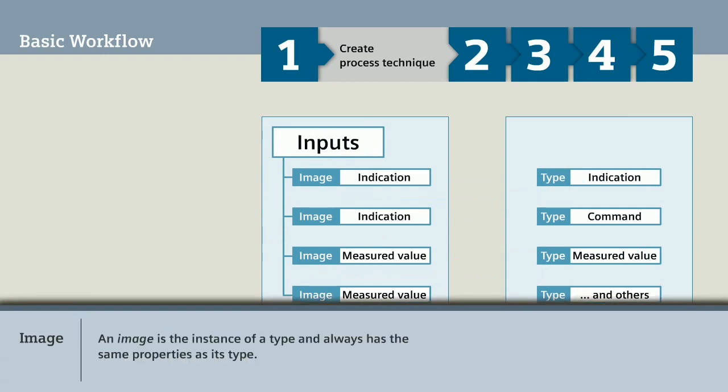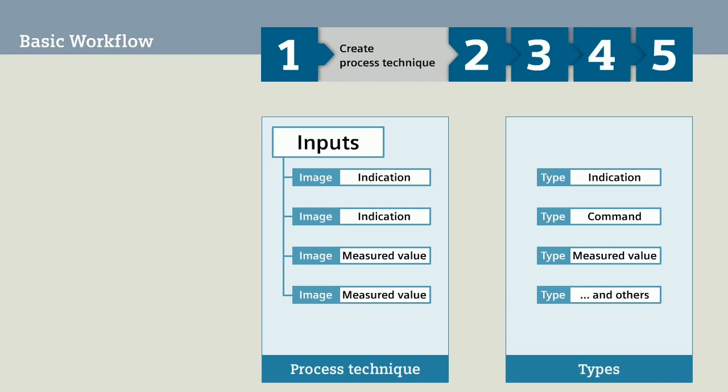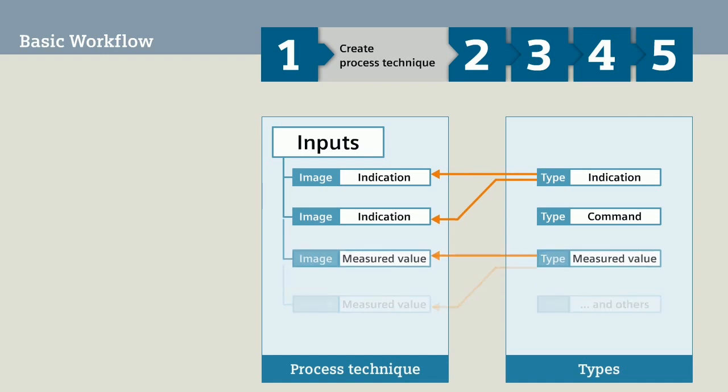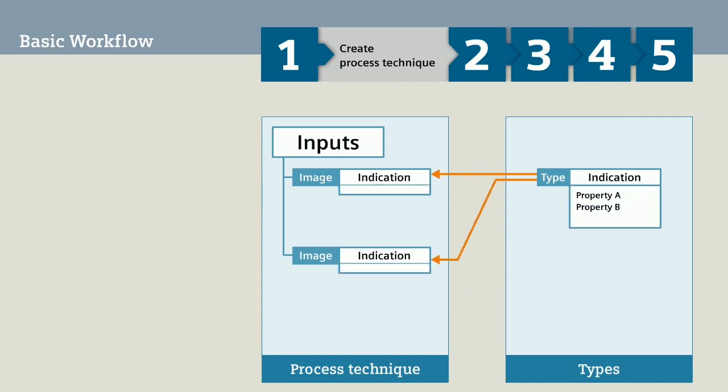An image is the instance of a type and always has the same properties as its type. An image is therefore not a simple copy, but is always linked to its type. If you change the properties of a type at a later point in time, this has a direct effect on all images of this type.